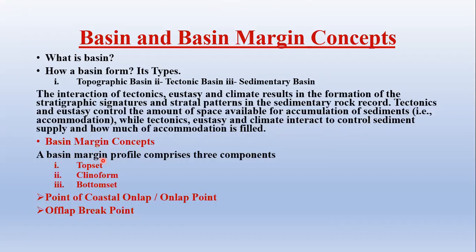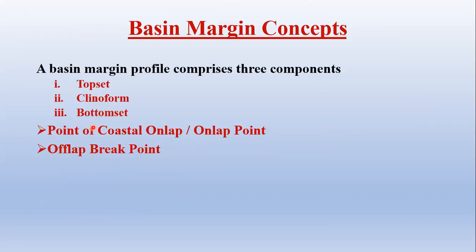Basin margin profile generally comprises three components: topset, clinoform, and bottomset. Most concepts and principles of sequence stratigraphy are based on observations from seismic data showing that prograding basin margin systems have consistent depositional geometry. Most deposition occurs near the basin margin, which is why we focus on the basin margin in sequence stratigraphy rather than the deep oceanic basin.